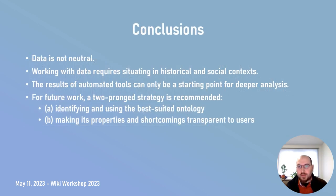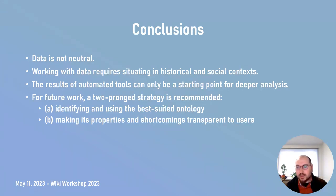In conclusion, we found biases especially in DBpedia in terms of representation of politicians in the Belgian Federal Parliament. Our findings confirm previous research related to misrepresentation in media in relation to elections. Our research fundamentally highlights the importance of being aware that data is not neutral and must be situated in historical and social context. The limitations of automated tools to recognize and understand context can increase the problem. A numerical and categorical result produced by automated tools should be treated as a starting point for deeper analysis, involving users in sense-making. We recommend a two-pronged strategy for future work: identifying and using the best-suited ontologies for data collection for a given task, and making their properties and shortcomings transparent to users.